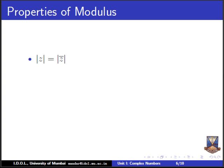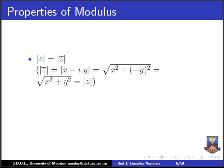Let us go to the properties of modulus. The first important property is |Z| = |Z̄|, because |x + iy| = √(x² + y²) and |x − iy| = √(x² + (−y)²) = √(x² + y²), which is the same. The second property is |Z1·Z2| = |Z1|·|Z2| — product of moduli. The third property is |Z1/Z2| = |Z1|/|Z2| — already seen in polar and exponential forms. All three are very important.